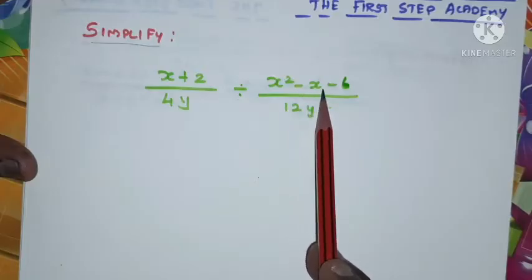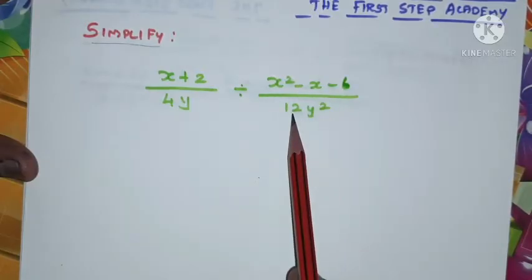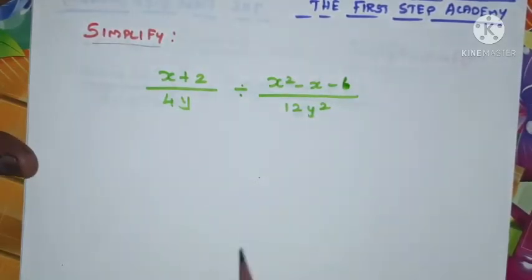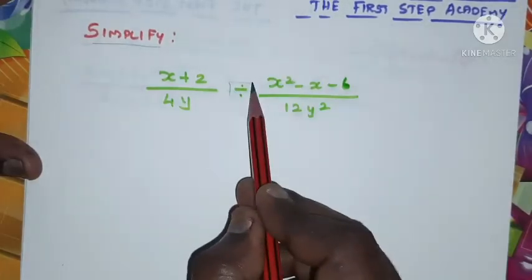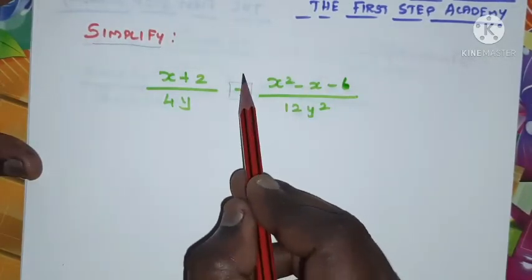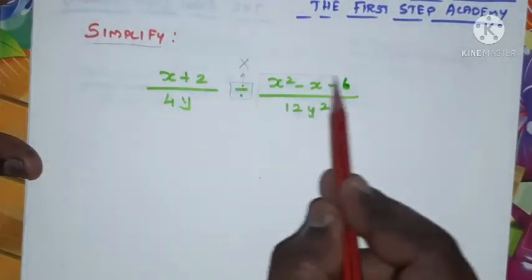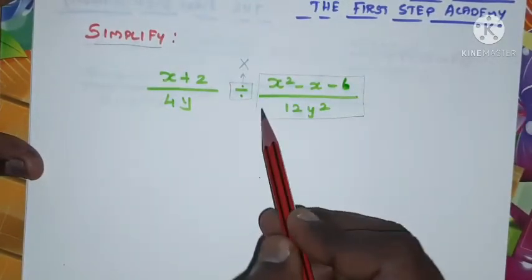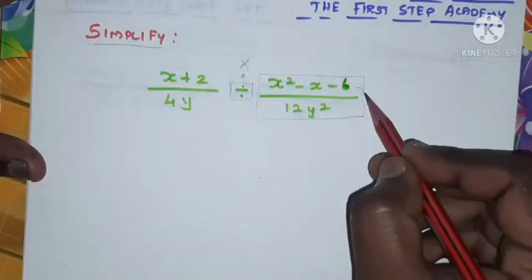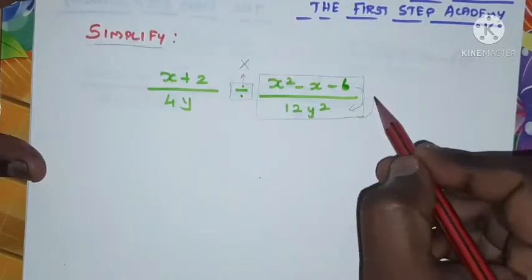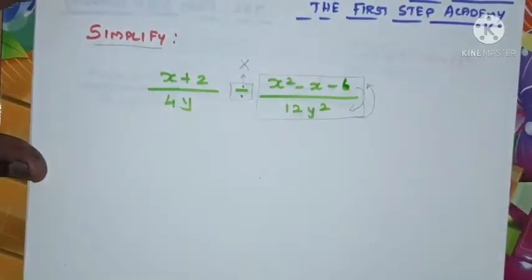First I'm going to change the operation from division to multiplication. Hence the term will become reciprocal, right? So numerator will become denominator and denominator will become numerator.